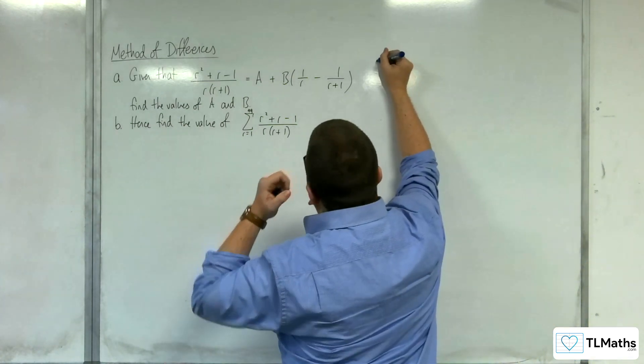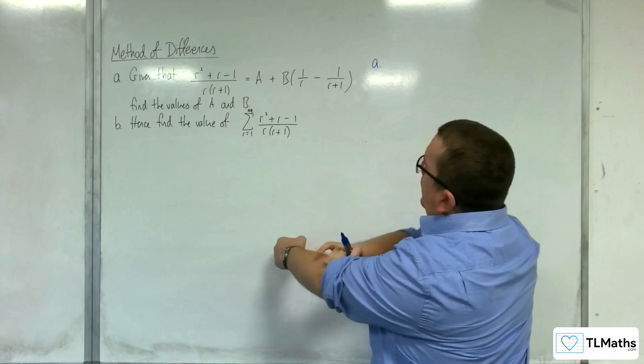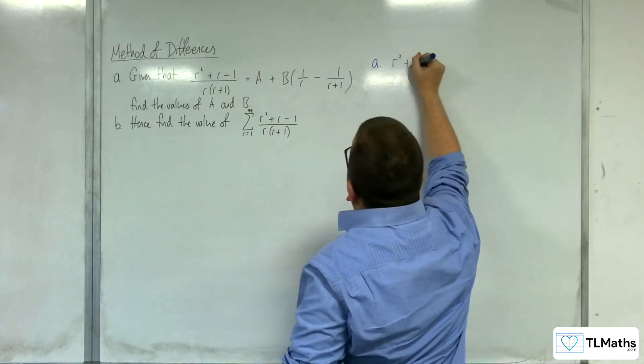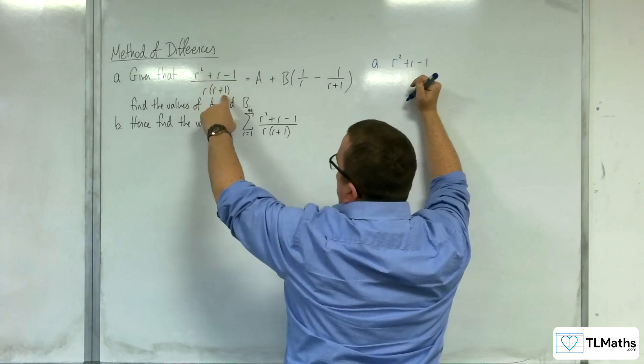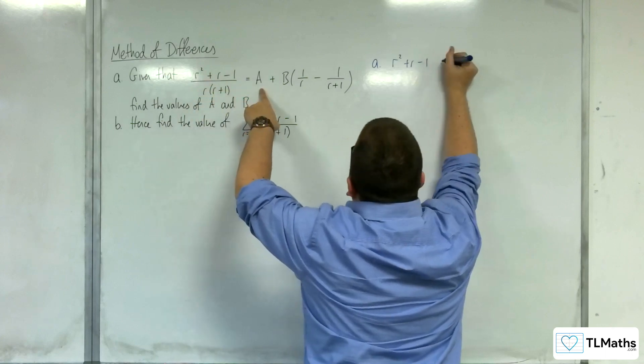So what we can say then for part a is that r squared plus r minus 1, multiplying that by r times r plus 1, so multiplying by that denominator, is going to be equal to...